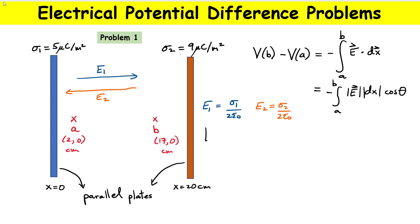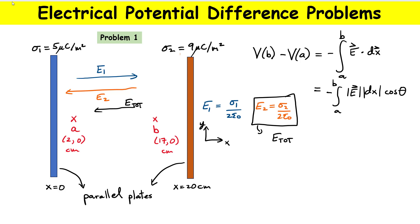You can see right away that the magnitude of E2 is going to be bigger than E1, which means the total field is actually going to be pointing to the left. The magnitude of the total field is sigma1 divided by two epsilon zero — positive because it points to the right — minus sigma2 divided by two epsilon zero. Factoring out the two epsilon zero, I'm left with sigma1 minus sigma2 over two epsilon zero as the magnitude of E total.